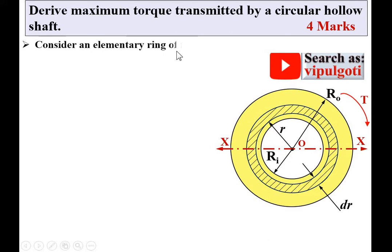Consider an elemental ring of radius r and thickness dr as shown in figure. The area of this ring is equal to dA, which equals 2πr·dr.